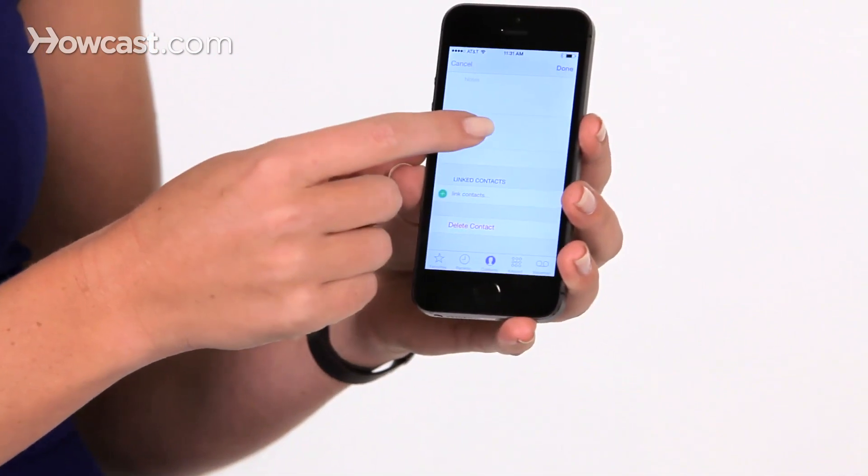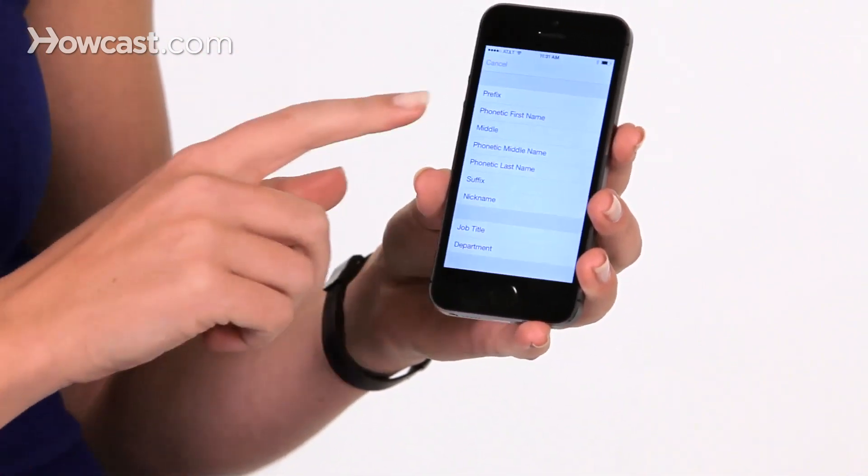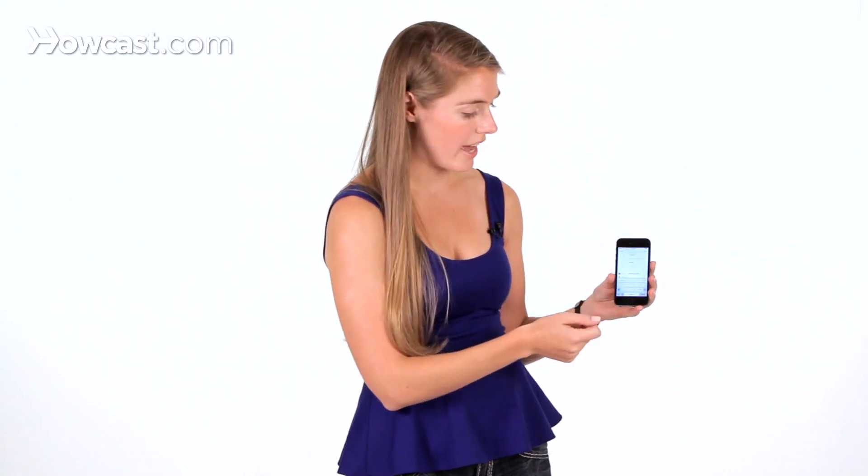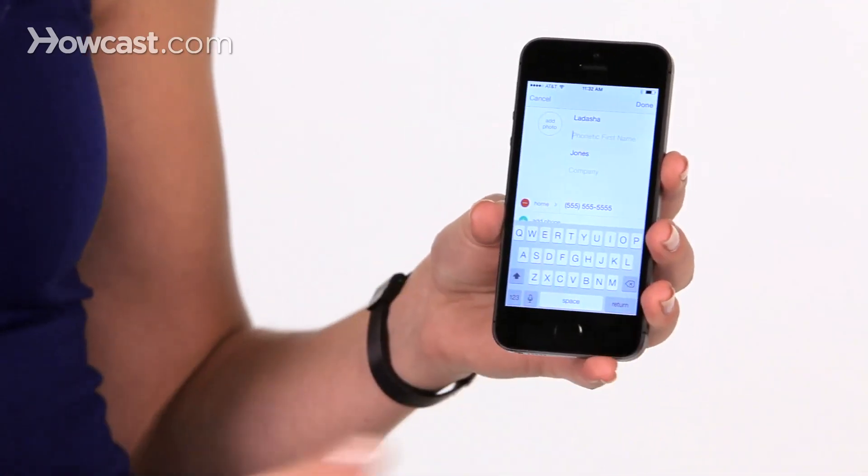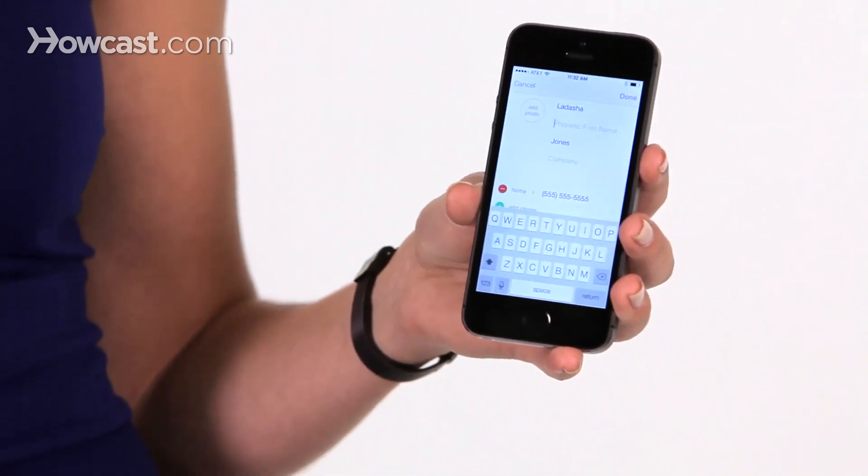So when I tap here, one of the first options I have is phonetic first name. So I can tap on that, and then in this space, I type in how to phonetically say her name.